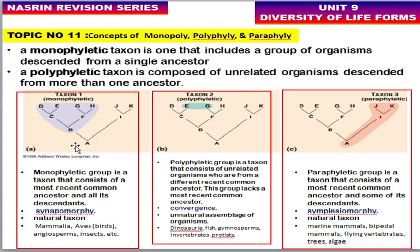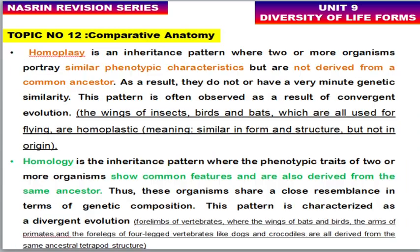Examples of monophyletic groups: Mammalia, Aves, Gymnosperms, and Insects. Examples of polyphyletic groups: Dinosauria, Fish, gymnosperm plants, invertebrates, and Protists. Examples of paraphyletic groups: marine mammals, bipedal mammals, flying vertebrates, ferns, and algae.